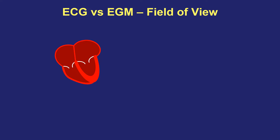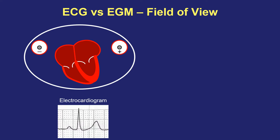First, I wanted to briefly distinguish between surface electrocardiogram recording and intracardiac electrogram recording. When we're recording a surface electrocardiogram, you have two electrodes—the anode and cathode—that are placed on the skin surface, both far away from the heart itself. The field of view of those electrodes encompasses the entire heart, so you will record the surface P-wave, all of the atrial activity, the surface QRS complex, all of the ventricular depolarization, and also the T-wave, the repolarization of ventricular tissue.